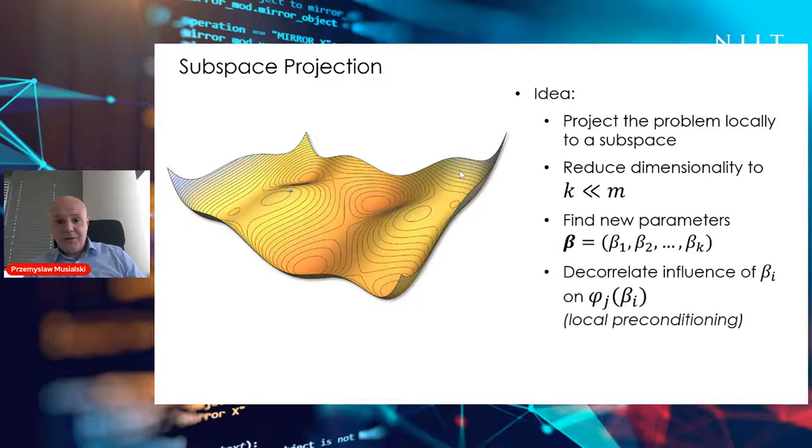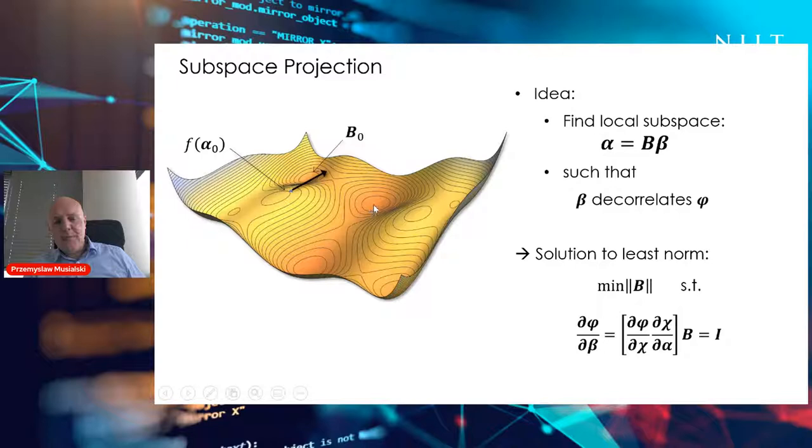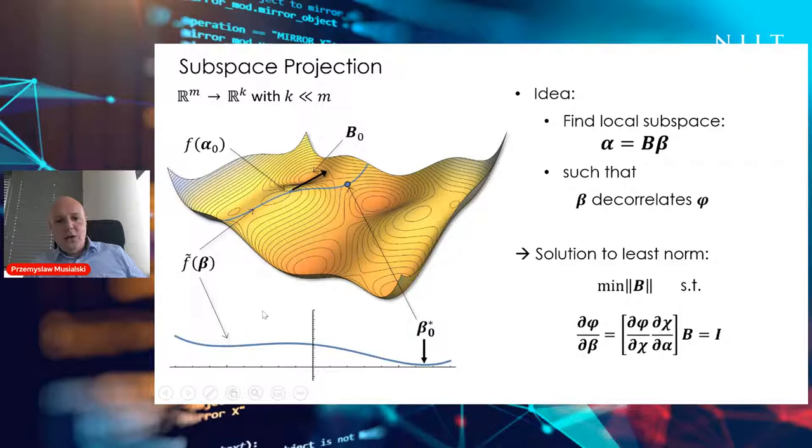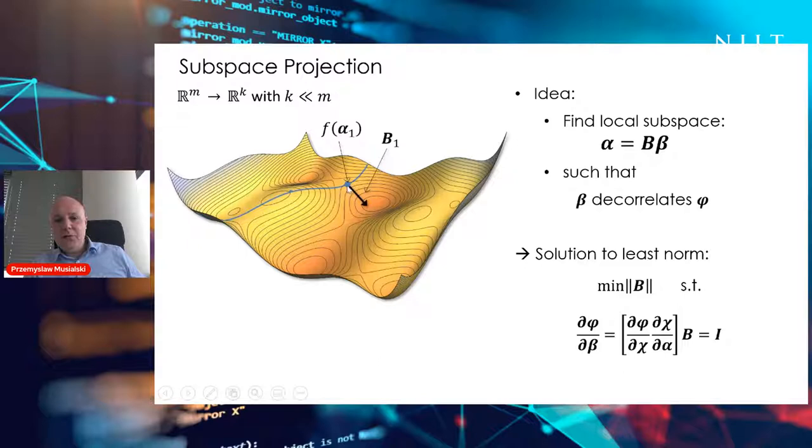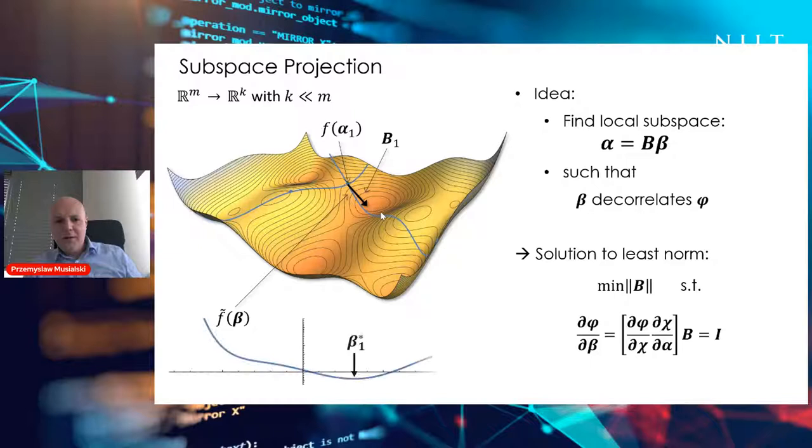We reduce the dimensionality of the space and project it locally to a lower-dimensional space. We find the best direction we want to go towards some point of minimum, the best we can find locally. We take this direction, make a cut through this high-dimensional surface, and then move just in this low-dimensional space to find the minimum. We repeat this procedure again. We project it on this cross-section line, move until we find the minimum, and repeat until we get into a minimum in this high-dimensional space.